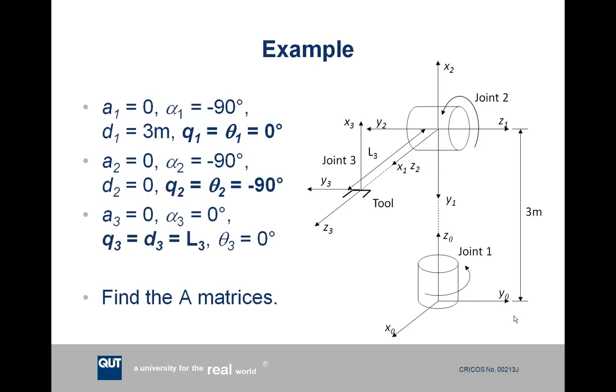Let's work out the parameters by using our four rules for finding the DH parameters. a1 is the distance from z0 to z1 measured along the x1 axis. However, in this case, z0 and z1 intersect each other, and in this situation, a is always 0. Alpha is the angle from z0 to z1 measured around the x1 axis. If we look at the x1 axis and look at how much the z axis has rotated, we can see it's rotated negative 90 degrees around the x1 axis. So alpha1 equals negative 90 degrees.